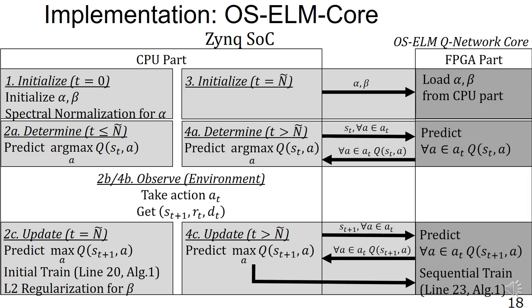Then, in the updated state, both prediction and sequential learning are executed. Therefore, s_t and all actions are sent to the PL part, which calculates the Q-value. The PS part takes the maximum of the Q-values, creates the correct answer data, and sends it to the PL part. The PL part executes sequential learning with a batch size of 1 based on the correct answer data.